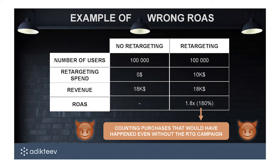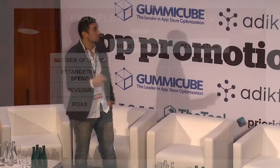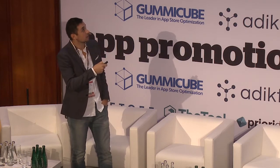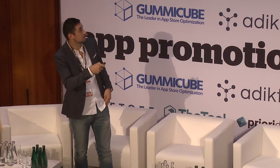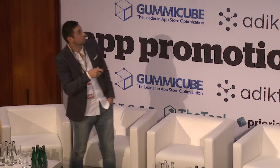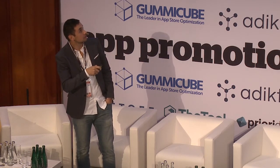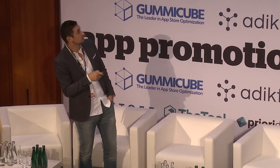You just have your app. You have 100,000 users in your app. You're spending zero dollars on retargeting, and those users spend 18K in your app. That's the base setup. Now let's say you want to start a retargeting campaign. You still have your same users and you start spending money — say 10K on a retargeting campaign. You measure attribution and see 18K in revenue. If you just focus on your retargeting campaign, you see: I spent 10K, it generated 18K in revenue, so my return on ad spend is 1.x.